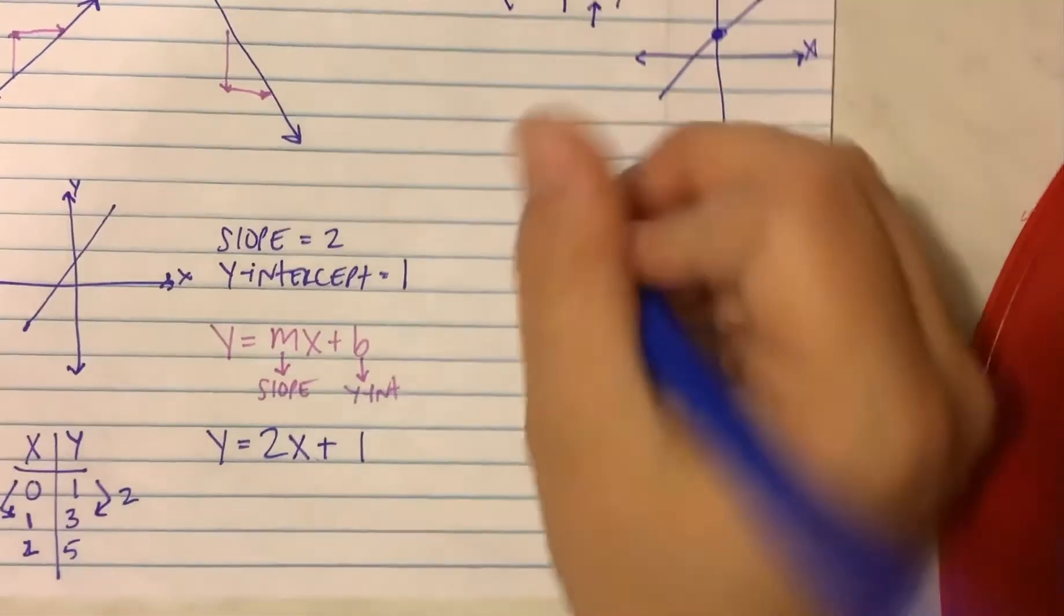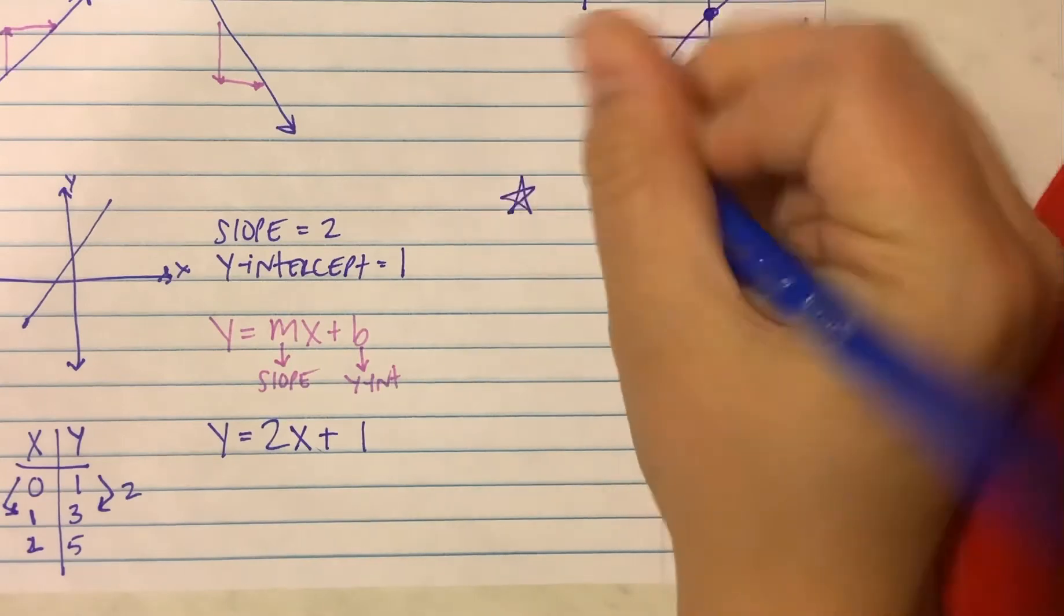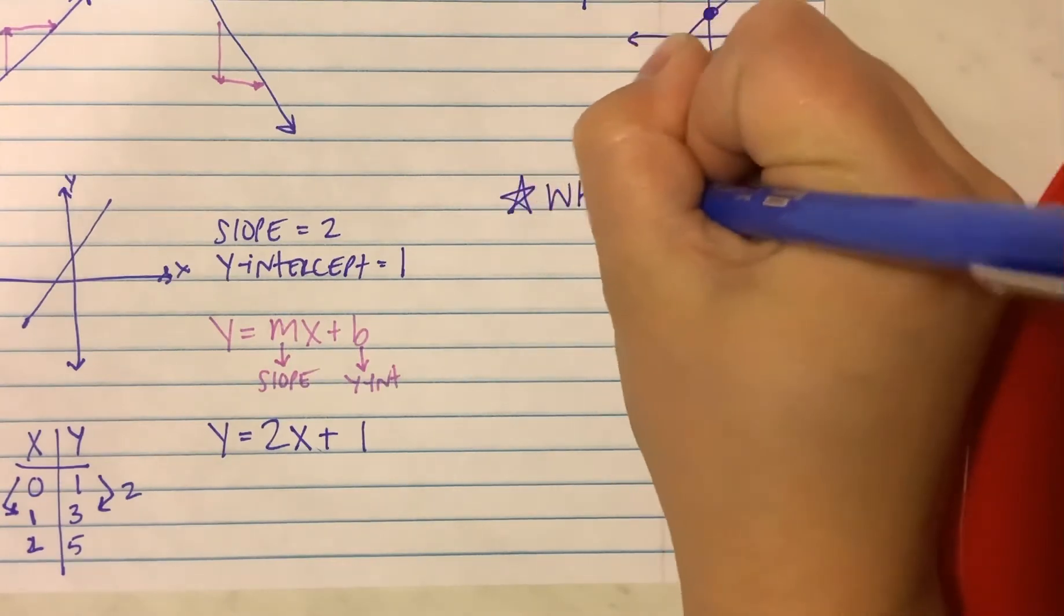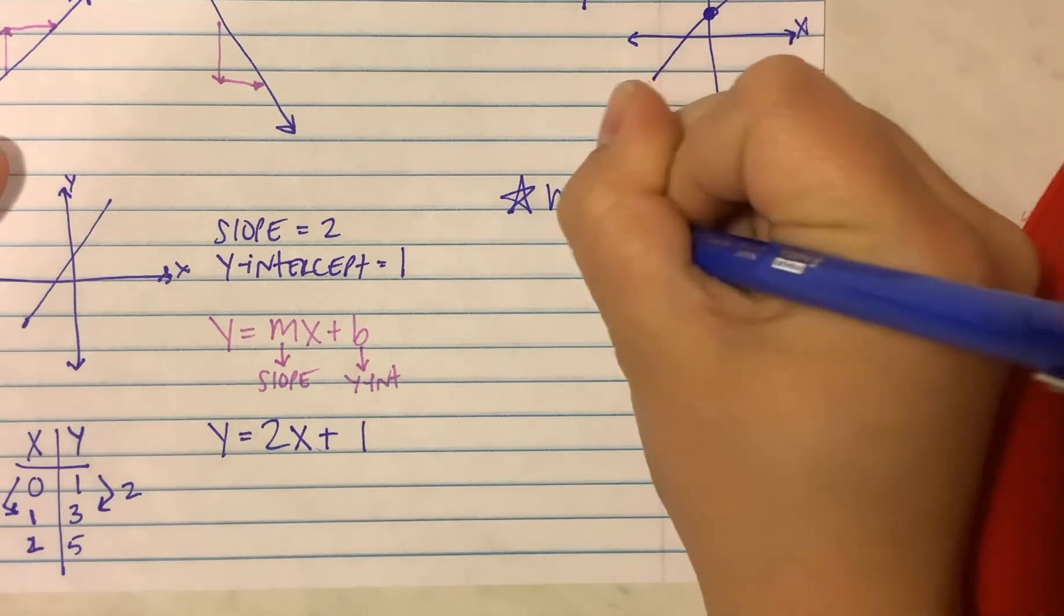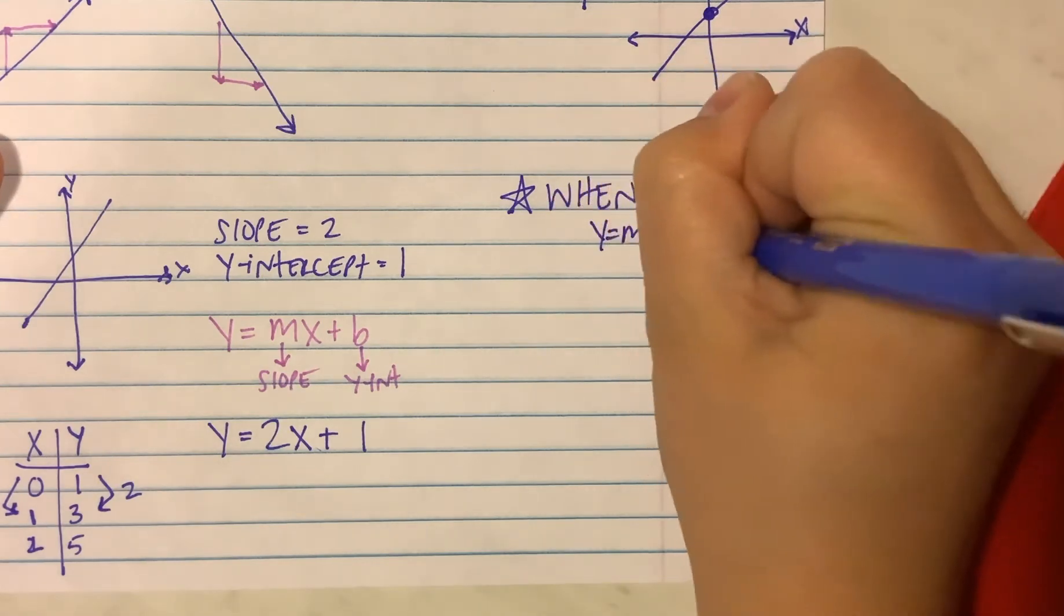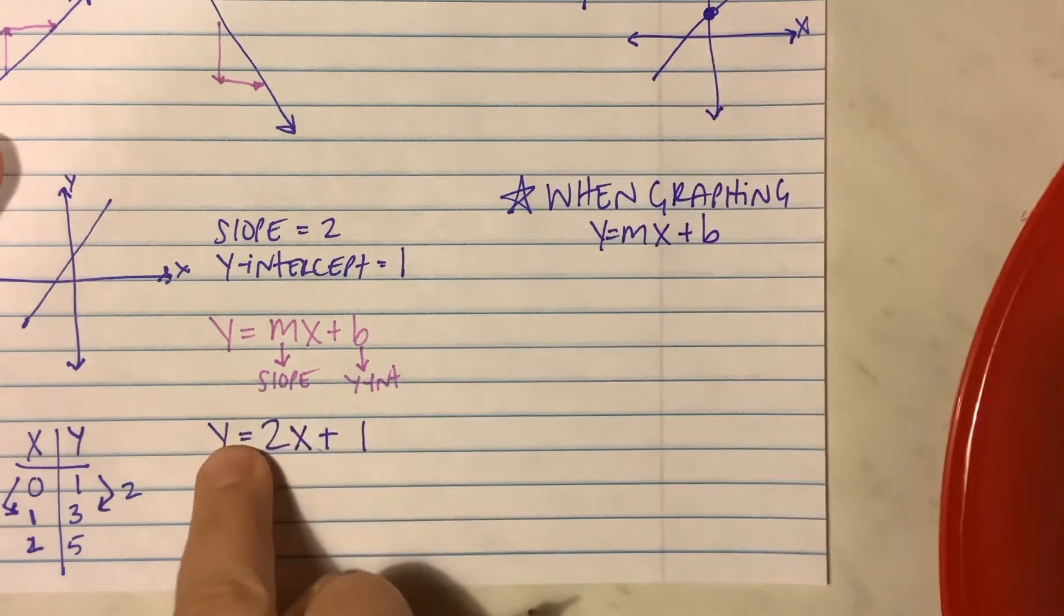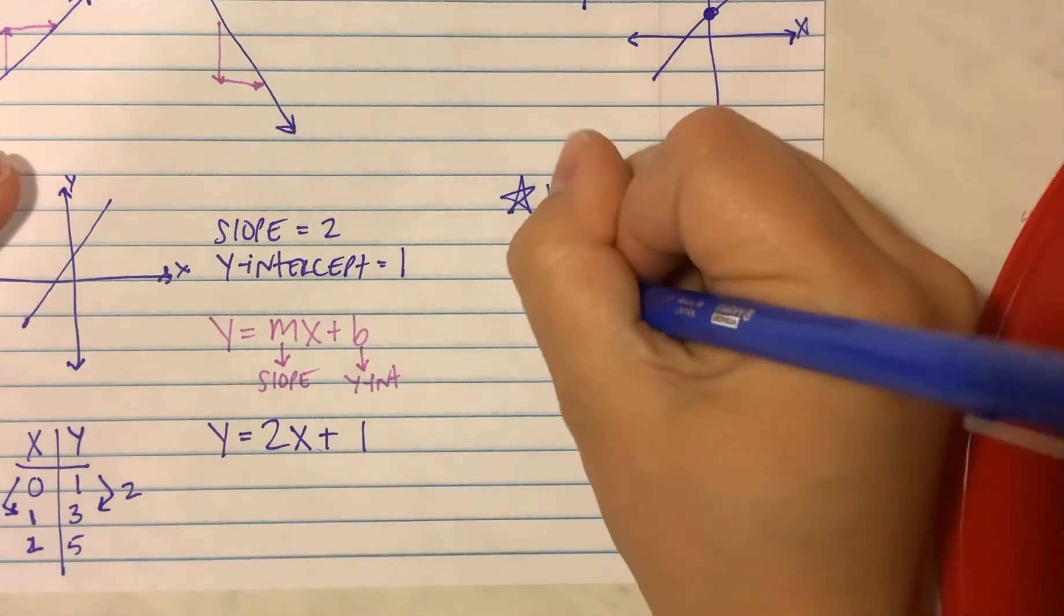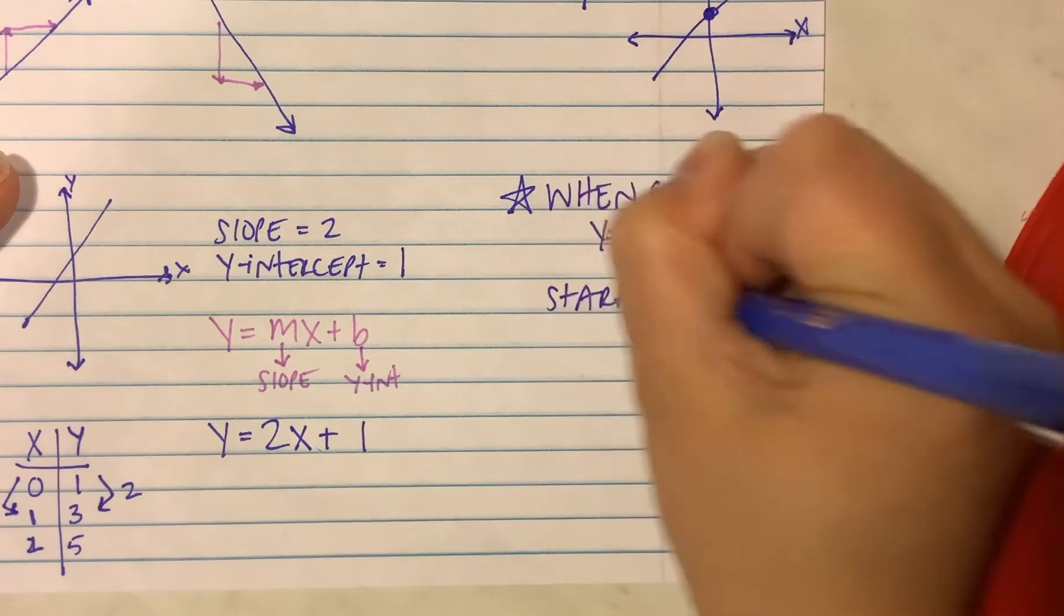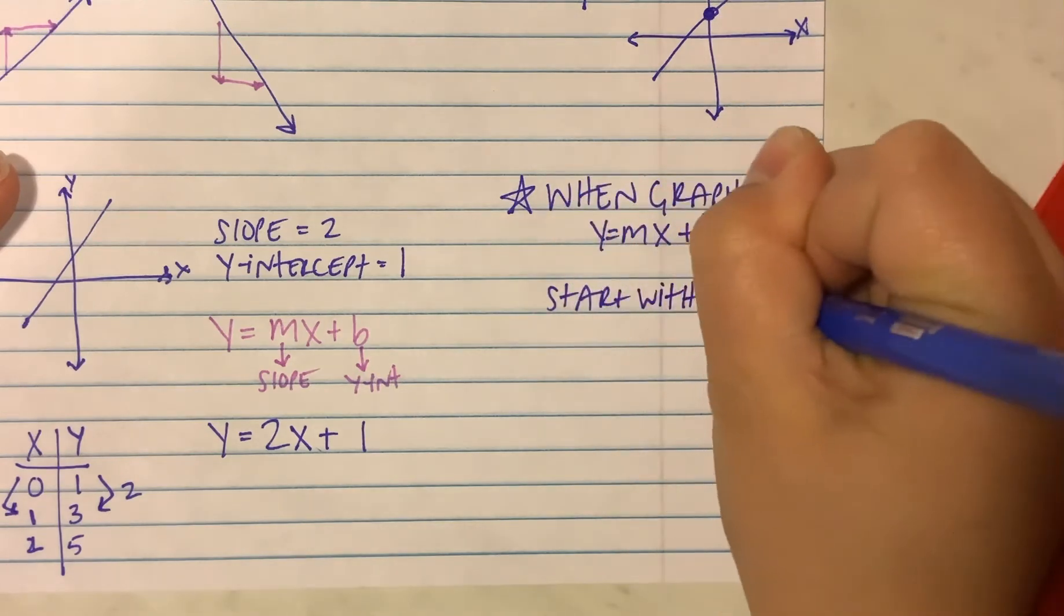If we were graphing, little side note right here. When graphing y equals mx plus b, if we ever had to take one of these equations and put it onto a graph, we would start with the y-intercept.